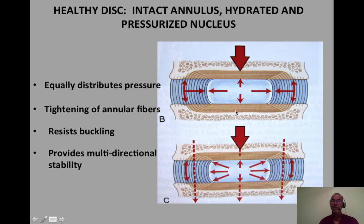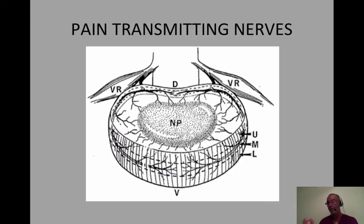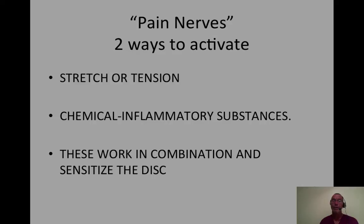The pressurization from the inner part of the disc is distributed equally to the outer fibers. When that happens, there is a tightening of these outer fibers that resists buckling and provides the multi-directional stability necessary for good function. The disc is also richly supplied by nerves circling the entirety of the disc. When these nerves are activated, pain signals are transmitted. This occurs in two ways: through stretch or tension, or the release of chemical inflammatory substances, and these two processes go hand in hand.